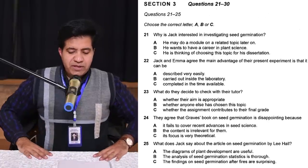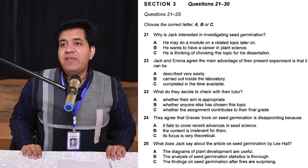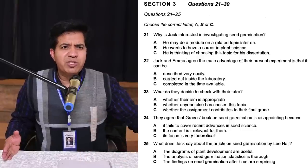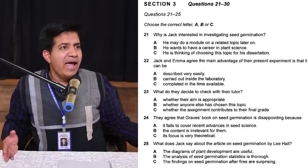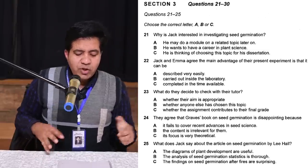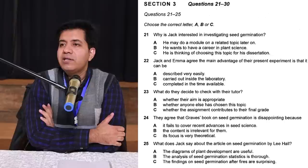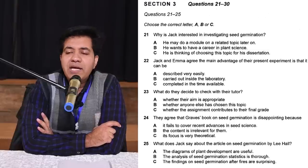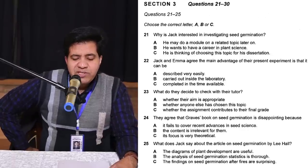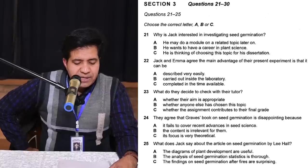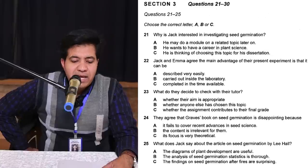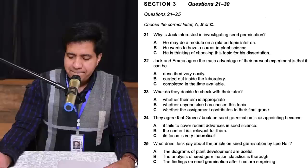Question 23: 'What do they decide to check with their tutor?' One will say 'okay, we can check with the tutor about it,' and the other might say 'I already know that.' Whatever they decide to discuss with the tutor — that is the answer. Option A: whether the aim is appropriate — they can use the word 'purpose' or 'suitable.' Option B: whether anyone else has chosen the topic. Option C: whether the assignment contributes to their final grade — like it equals 20% of the final grade.